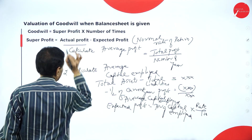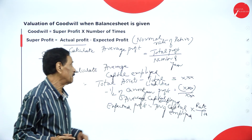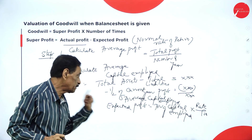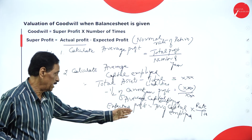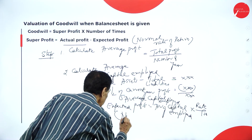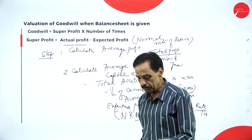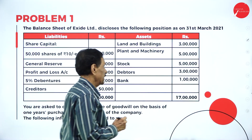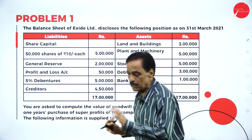The actual profit will be given as an average. Then calculate the average capital employed: total assets minus total liabilities, minus half of the current year profit, to get average capital employed. From that you calculate expected profit: average capital employed multiplied by rate divided by 100.